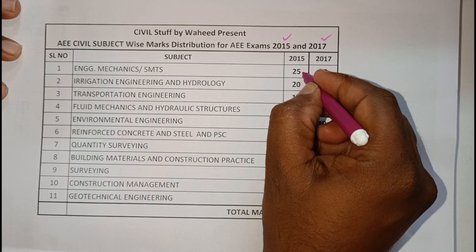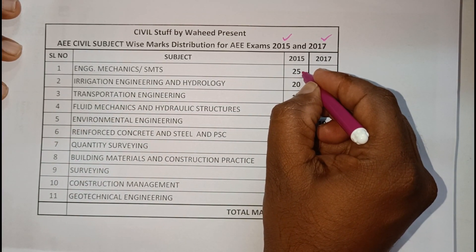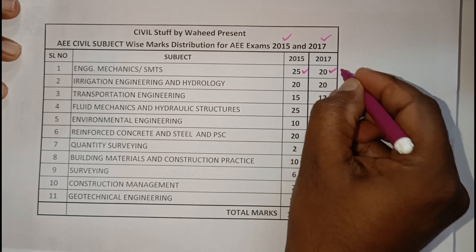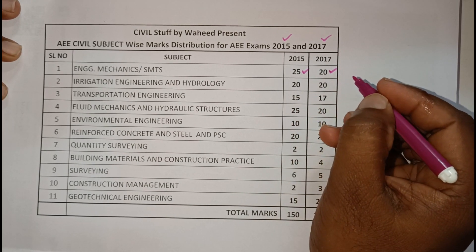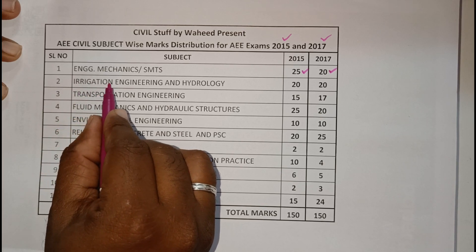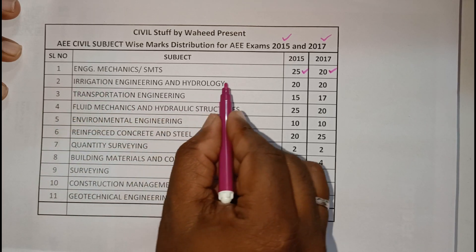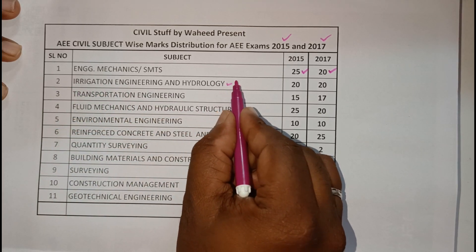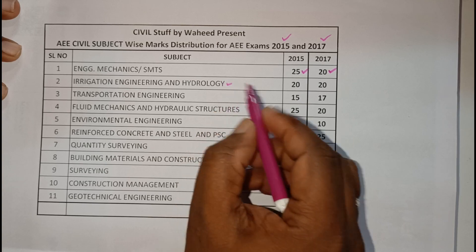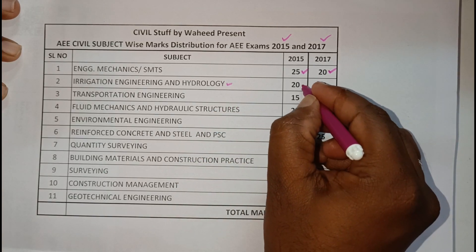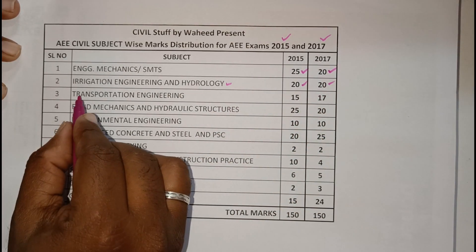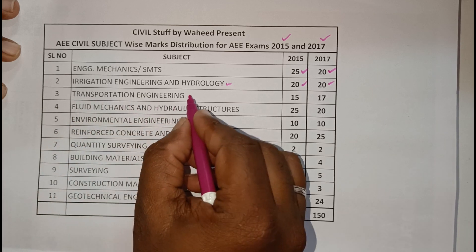For engineering mechanics and strength of materials, in 2015 it covers about 25 marks whereas in 2017 it is 20 marks. For irrigation engineering and hydrology, hydrology is a separate subject, and both years cover approximately 20 marks each.